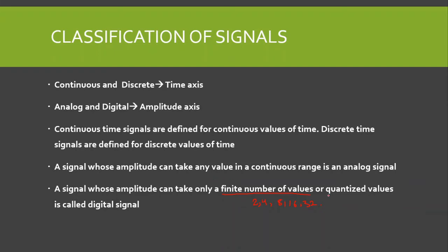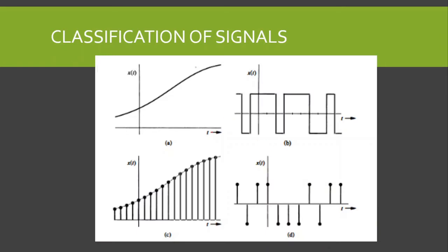Looking at signal A in the picture, the time is continuous, so this is a continuous time signal. Now checking the amplitude axis, the amplitude is also continuous — the signal can take any value on the amplitude axis. Therefore, this is a continuous and analog signal.